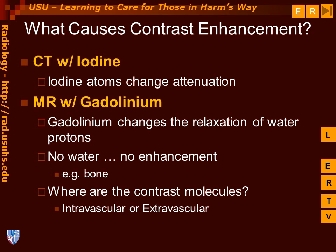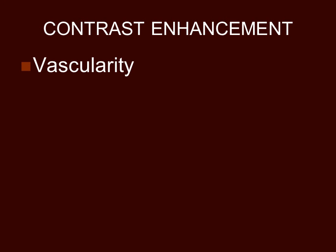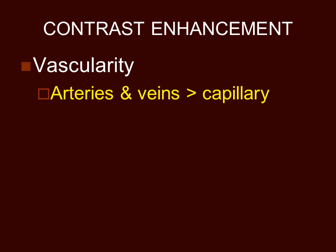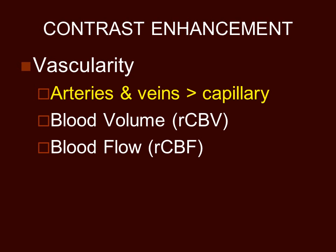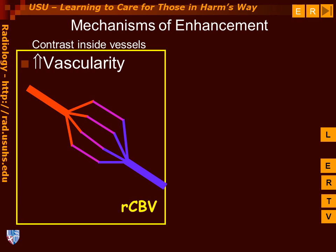The contrast molecules can be in two different locations after giving an intravenous injection. The contrast can be contained within the vessel — this is intravascular enhancement — or the contrast may be outside the vessel, which is extravascular enhancement. Contrast enhancement can be related to the vascularity of a lesion, primarily the blood volume contained within arteries and veins. There are ways to measure the amount of blood flow and blood volume in a brain lesion as well as in the normal brain. We can connect these two properties of relative cerebral blood volume and relative cerebral blood flow through an equation to calculate the perfusion and the mean transit time.